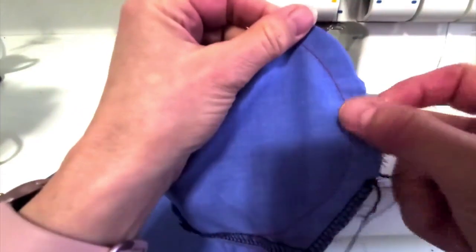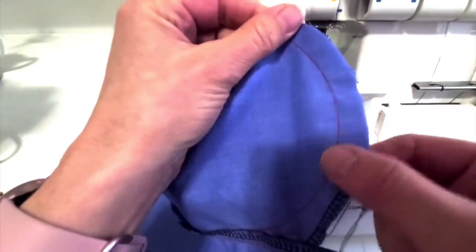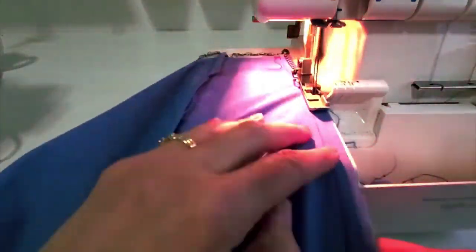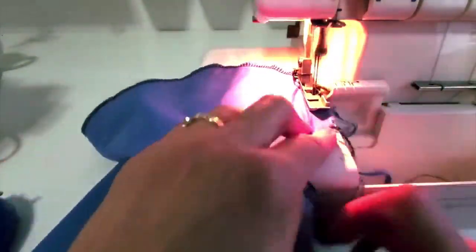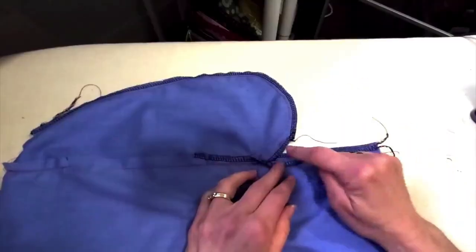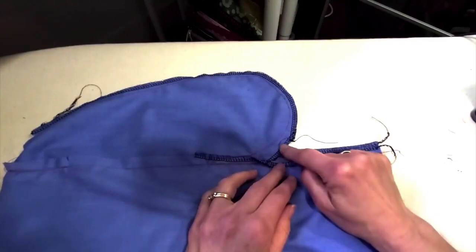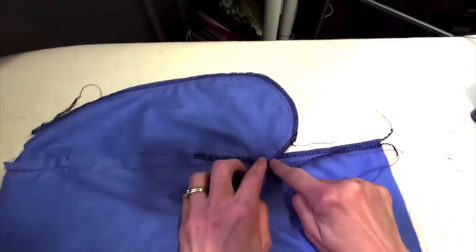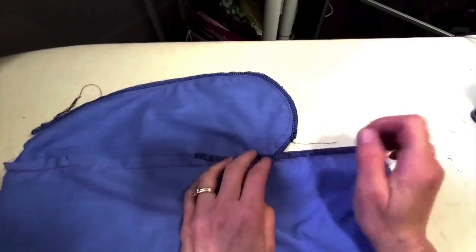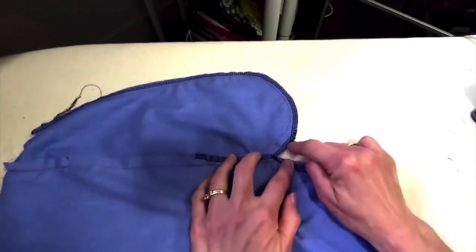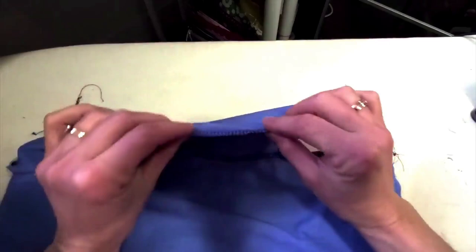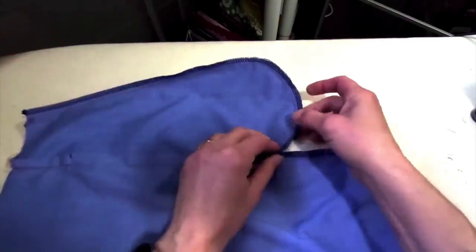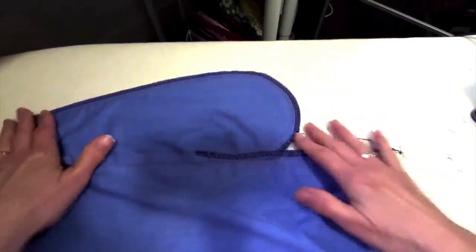Back at the serger I'm going to serge the rest of that pocket edge now and just overlap where I serged and come off. Here we go. Now you see why I serged that little bit of the pocket first, because if I had tried to do that I would not have been able to get up in here without cutting my side seam. So doing that little bit first means that I can serge that with just one layer instead of having two layers and having extra bulk.